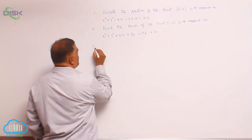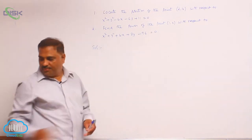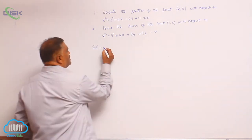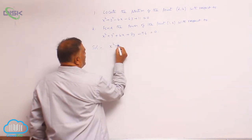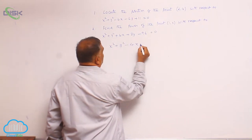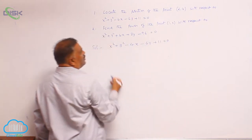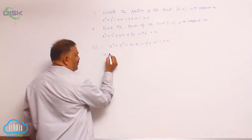So, solution for problem number 1. Now, let us say this is x² + y² - 4x - 6y + 11 = 0. Point is (2,4).